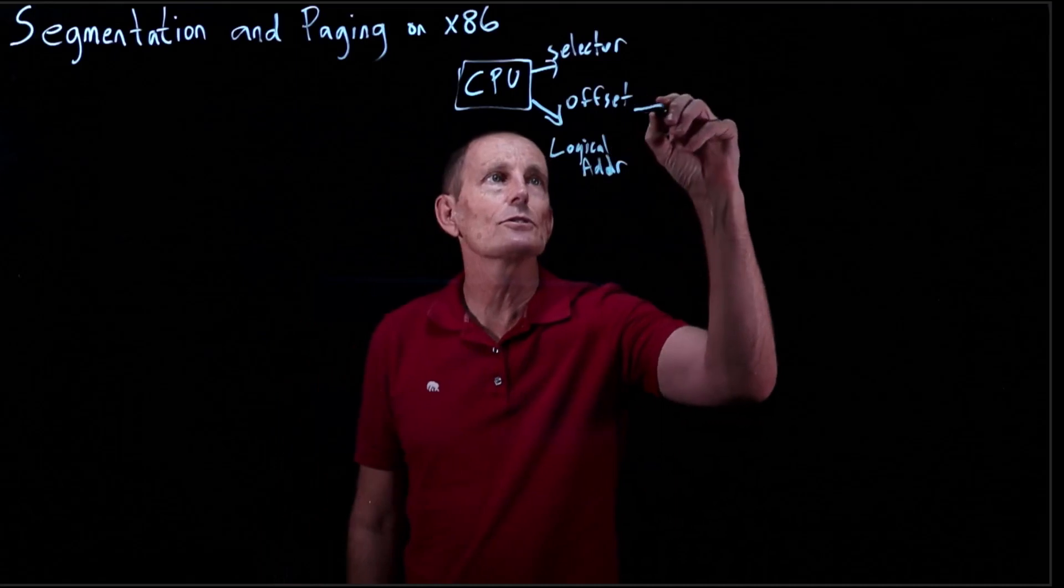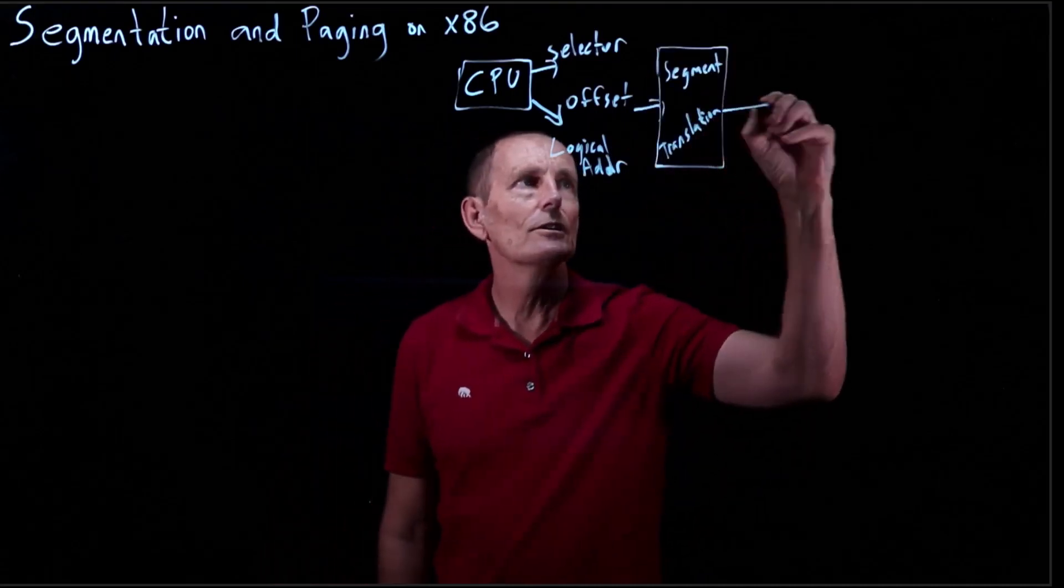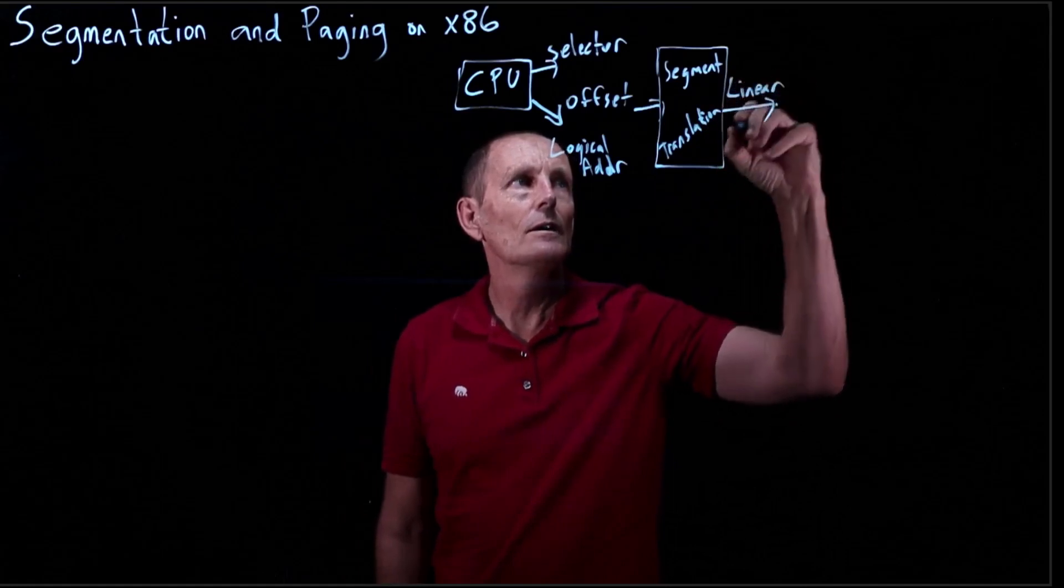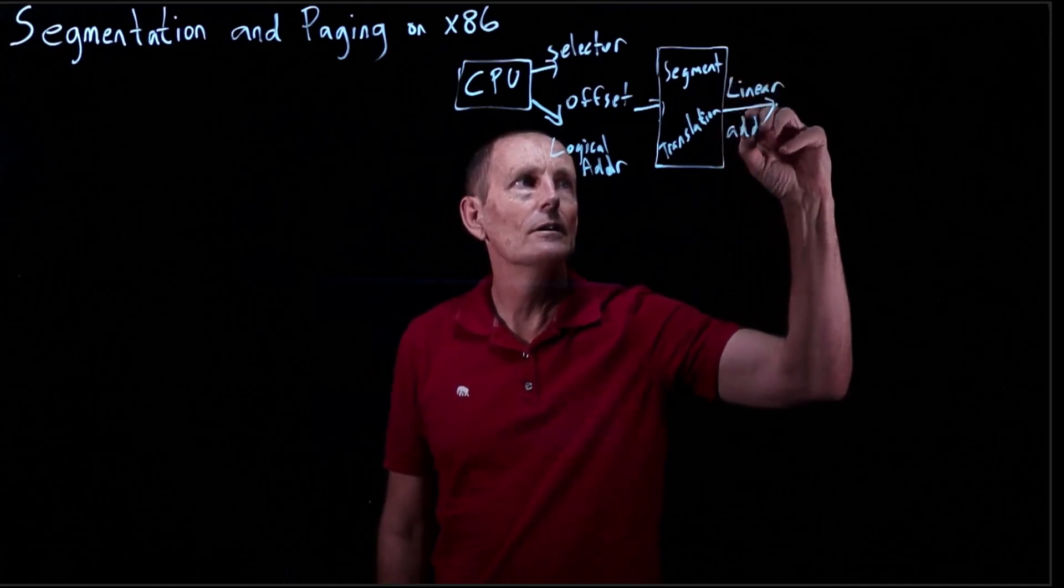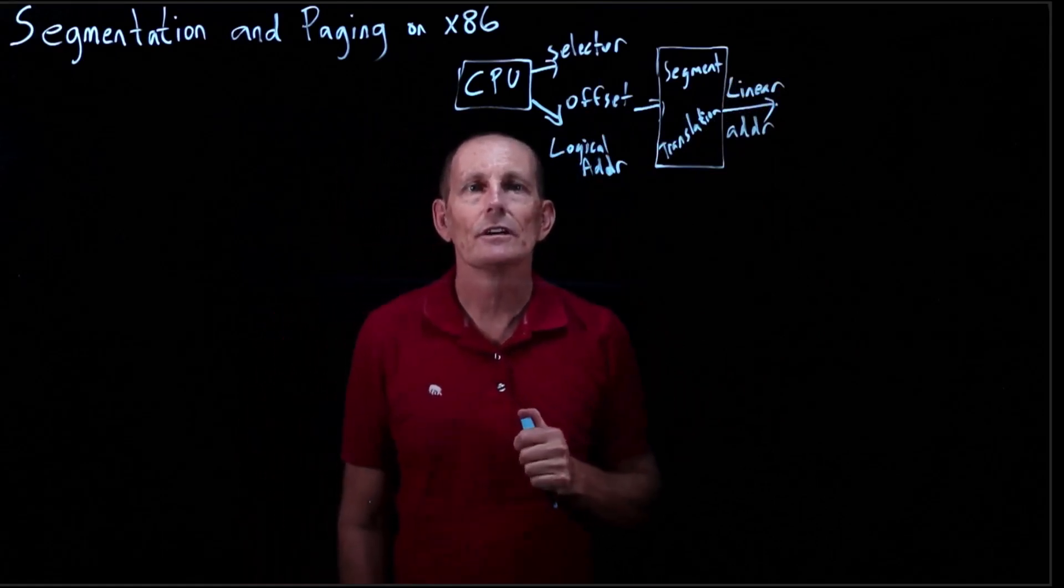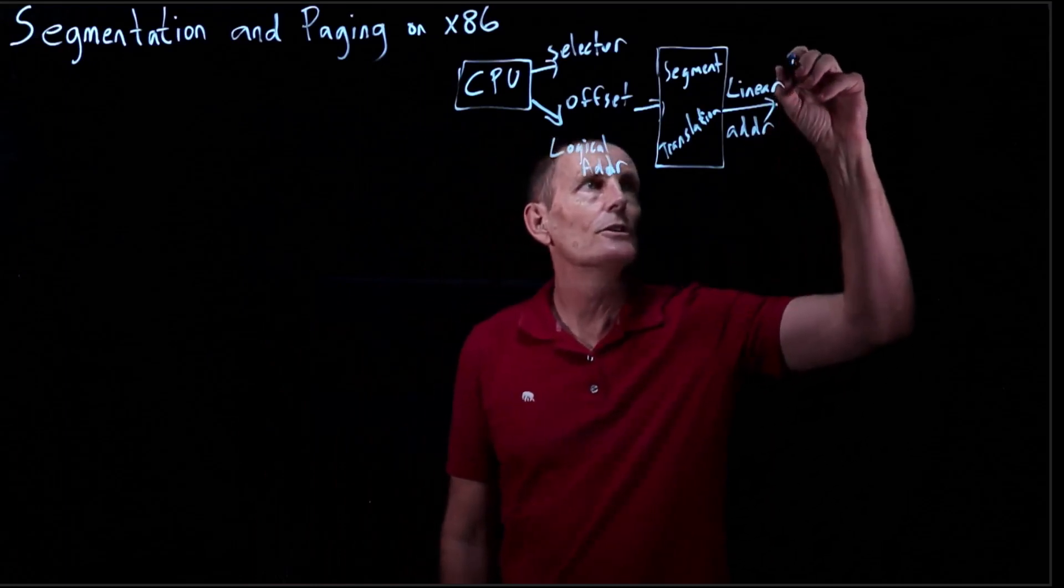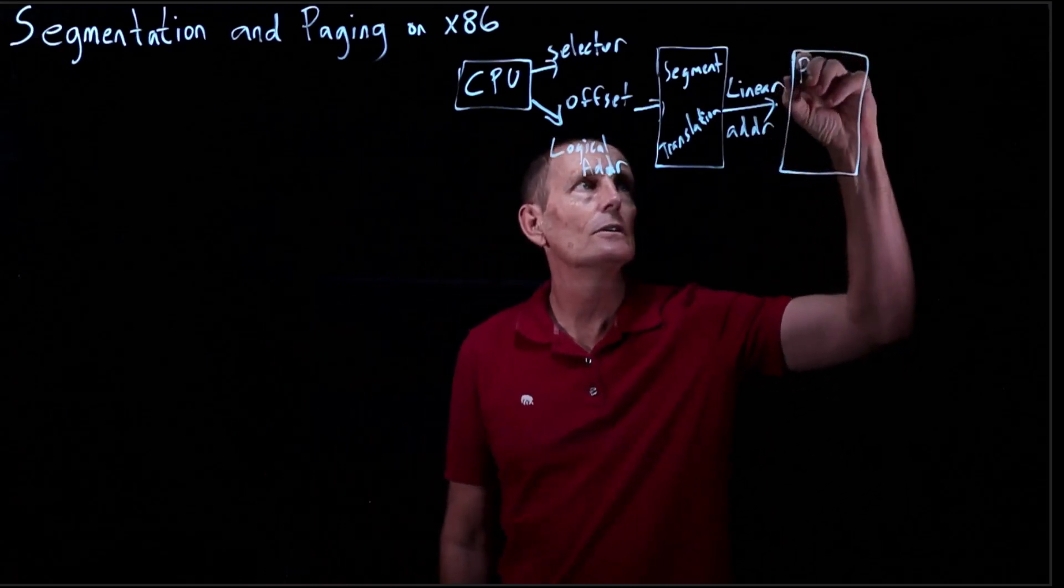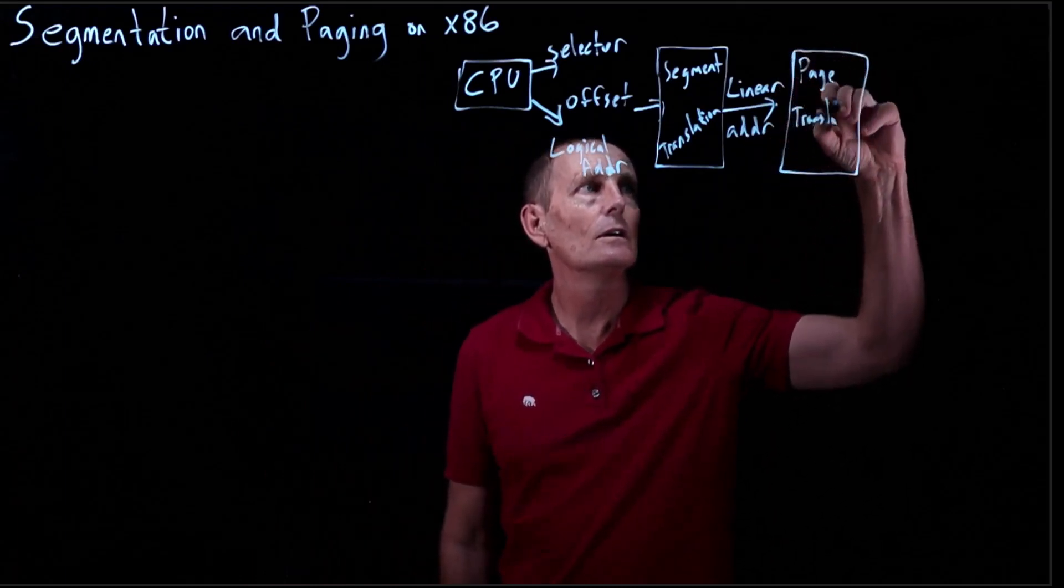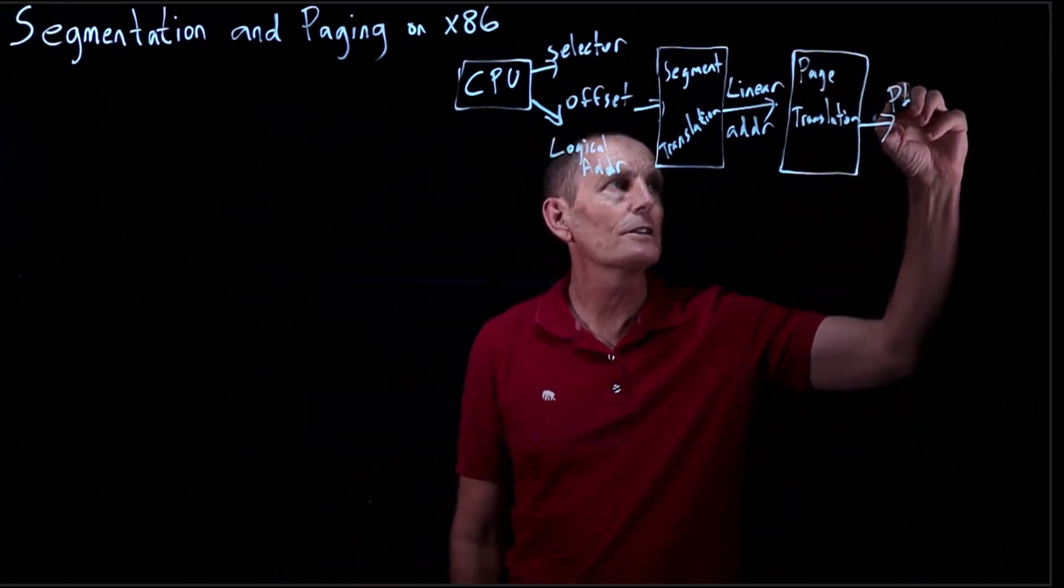That then goes through segment translation, and segment translation spits out a linear address. Note, by the way, that this logical address is sometimes called a virtual address. That linear address then goes through page translation, and that gives out a physical address.